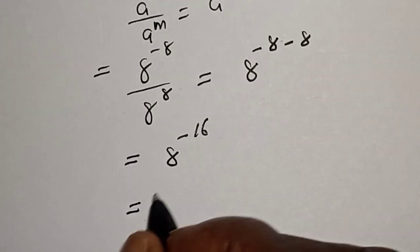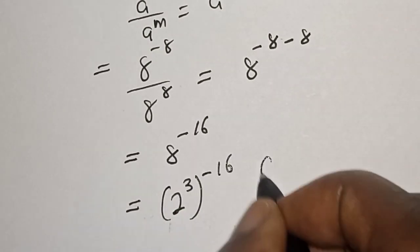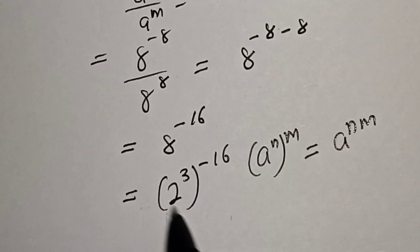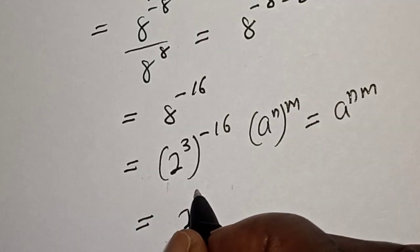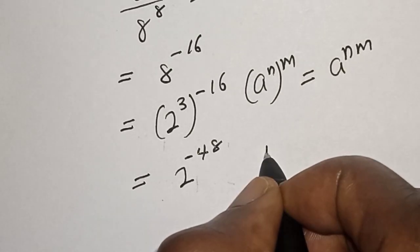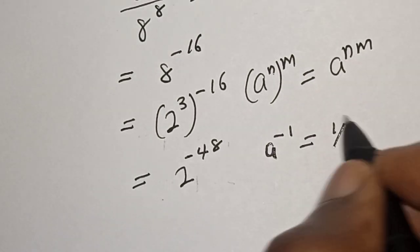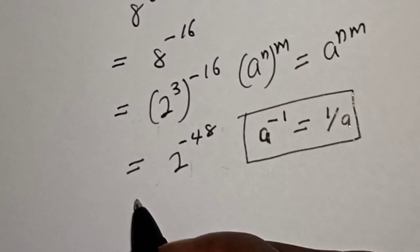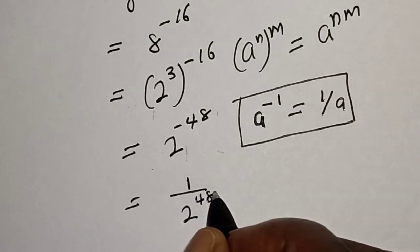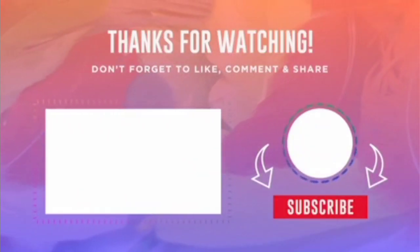Since 8 equals 2 raised to power 3, we have 2 raised to power 3, raised to power negative 16. Using the rule a raised to power n, raised to power m equals a raised to power n times m, this becomes 2 raised to power negative 48. Since a raised to power negative 1 equals 1 over a, this gives us 1 over 2 raised to power 48, and this is our final answer. If you enjoyed the class, please don't forget to like, share, comment, and subscribe. Thank you.